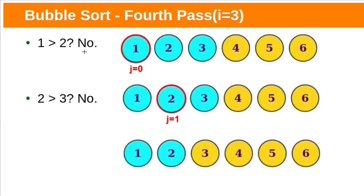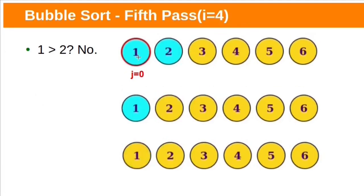In the fourth pass, the algorithm performs two comparisons. The first block is compared with the second: 1 is not greater than 2, so no swap. Compare the second block with the third: 2 is not greater than 3, so do not swap. In the fifth pass, only one comparison is performed. The first block is compared with the second: 1 is not greater than 2, so no swap. After completion of the last pass, all blocks are in sorted order.